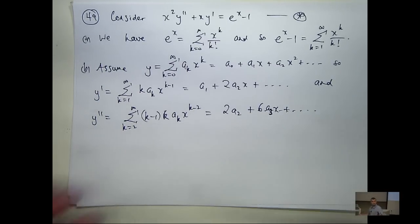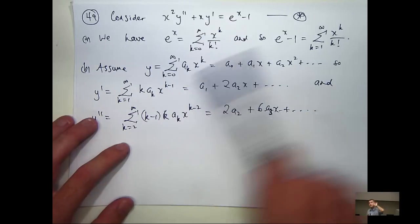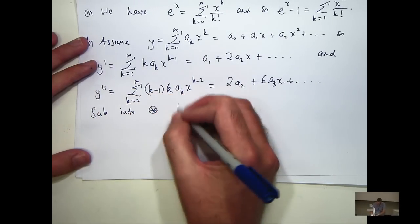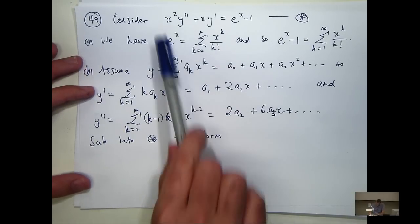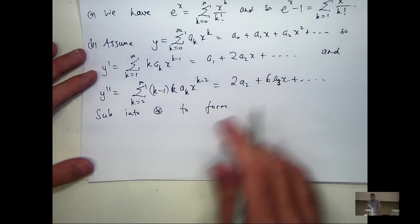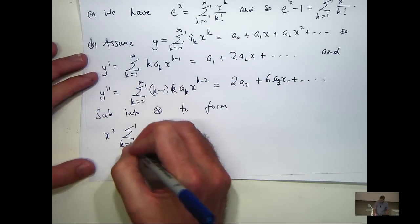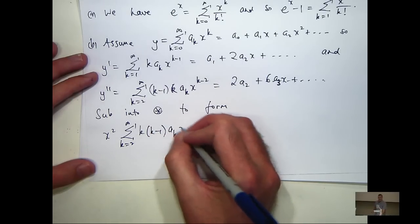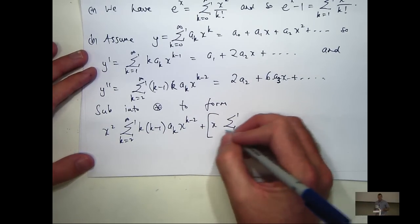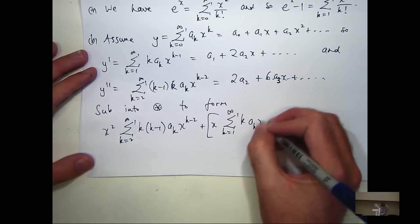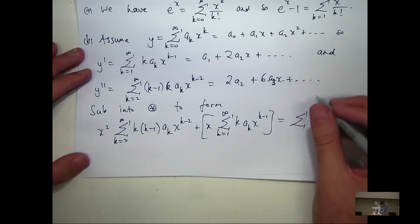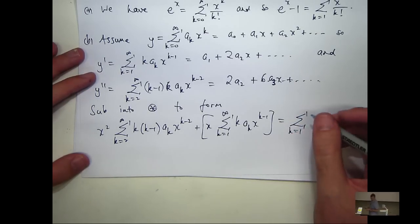All right, so let's take these four, I guess we only need three of these things, sub them in here, and then we're going to equate the coefficients. So on the left-hand side, I'm going to have x squared times this plus x times this equals this series. So it's a little bit messy. That's my first term, my x squared y double prime. That's my second term, x times y prime.